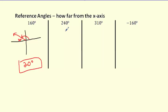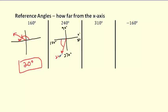How about 240°? Get good at knowing: straight up is 90°, straight across is 180°, down is 270°, and back to 360°. So 240° is somewhere down here in the third quadrant. How far past 180° is it? It's 60 degrees past 180, so the reference angle is 60°.